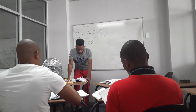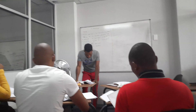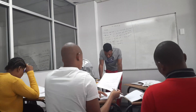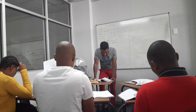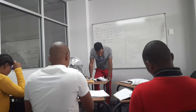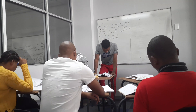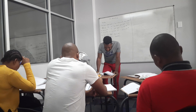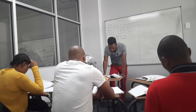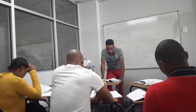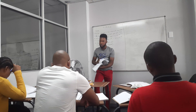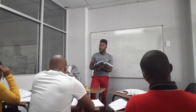Let us look at question 1.4. They are saying a generator has to be converted to a level compound generator by adding a series field winding. From a test on the machine with the shunt excited, it is found that the shunt current is 5.3 amps to give a voltage of 525 volts at no load.